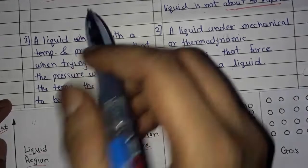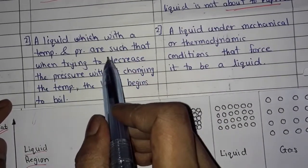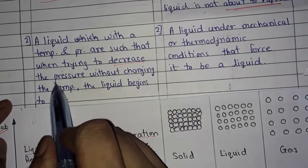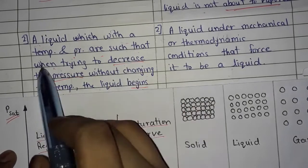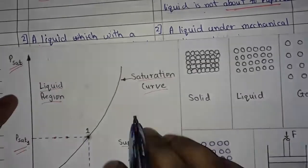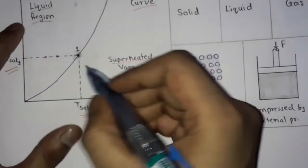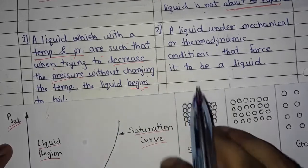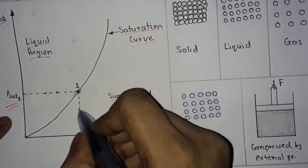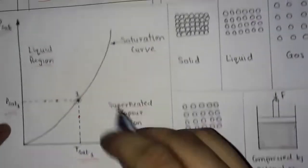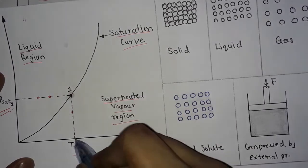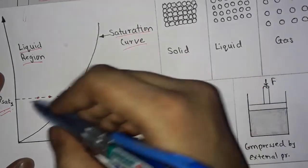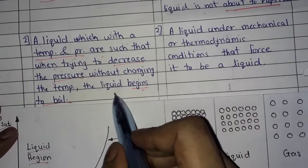Second point — in saturated liquid, the temperature and pressure are such that when trying to decrease pressure without changing the temperature, the liquid begins to boil. Here, when we decrease the pressure below saturation pressure while keeping the temperature at T-sat 1, the liquid begins to boil.